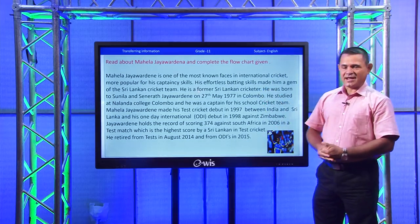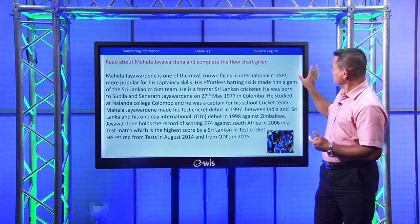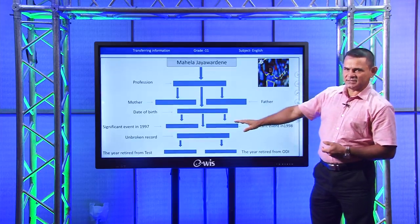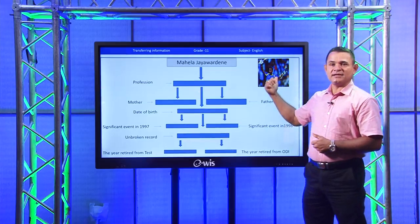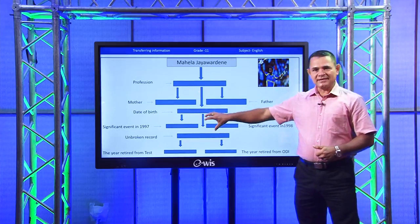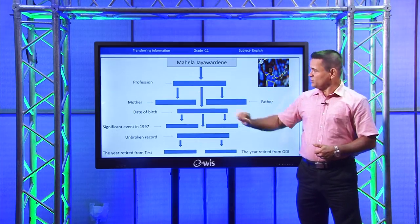Can you read this and extract necessary information? I will show you the flowchart so it will help you. Now just remember this — what is the first thing? Profession, mother, father, date of birth, significant event in 1997, significant event in 1998, unbroken record, the year retired from test, and the year retired from ODI — one day international. When you read the text about Mahela Jayawardena, keep these fields in mind because they are the ones you need to fill the gaps.